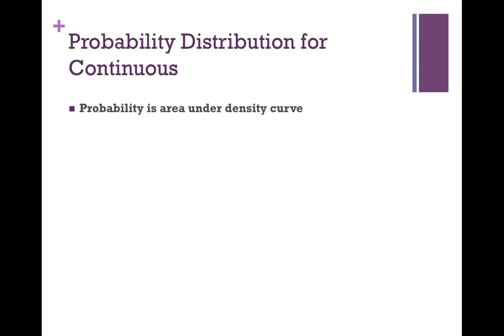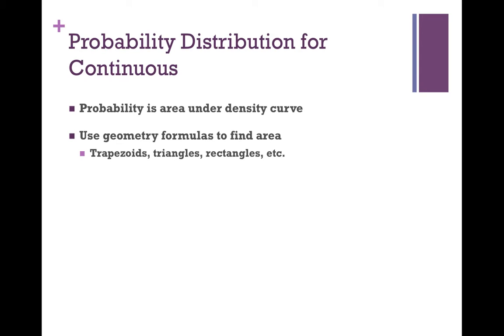Next we move on to probability distributions for continuous variables. These were always graphs — the probability is the area under the density curve. This is where we used geometry formulas: you're given a graph and find the area of a trapezoid, triangle, or rectangle, and that area is the probability. The area under the entire curve is always 1, so your probability will be less than 1. You can also find the area by integrating if you're in Calc AB or BC.